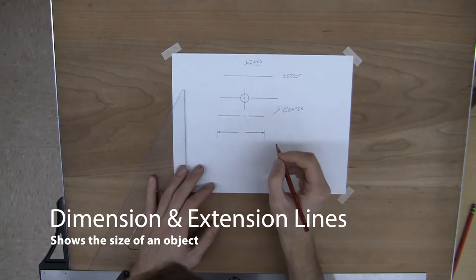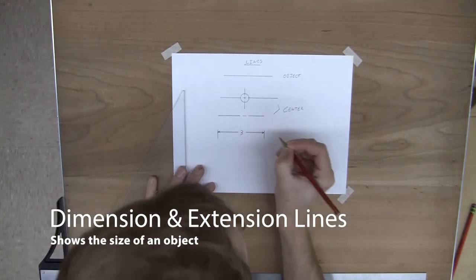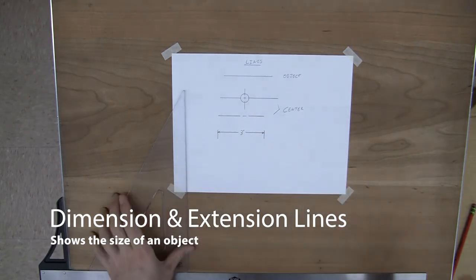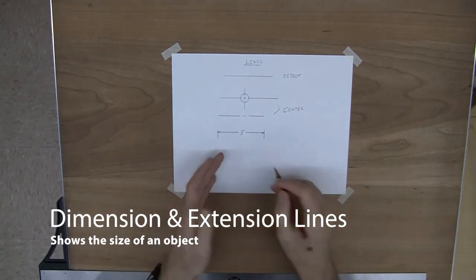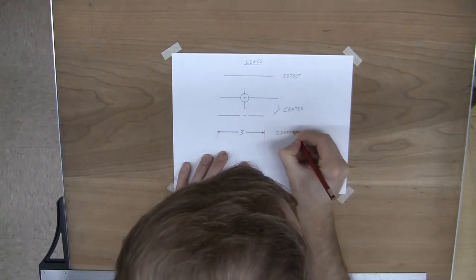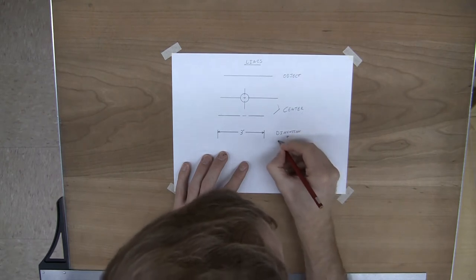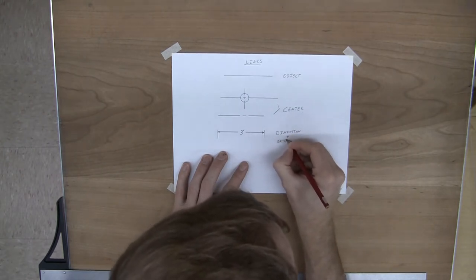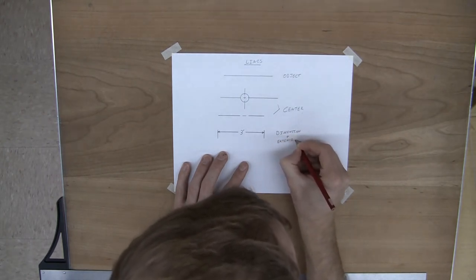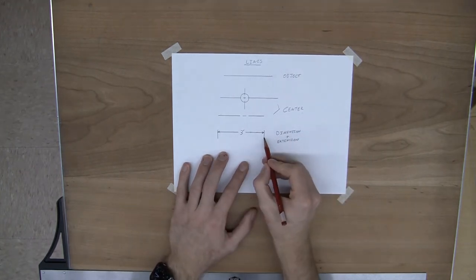Dimension lines are going to have the little arrow on there, and I'll throw in a random number just to show you what it's in. This is a dimension and extension. This is the dimension line, this is the extension line.